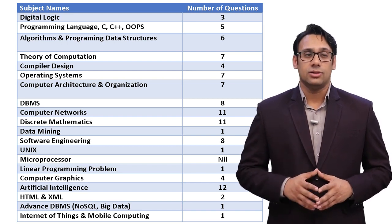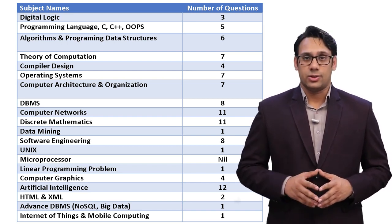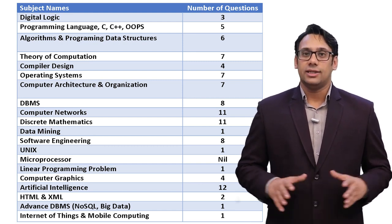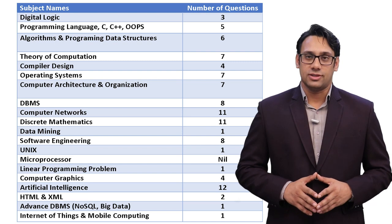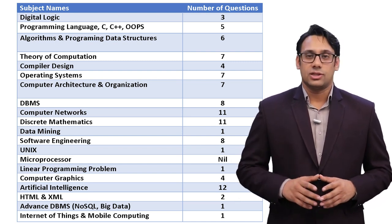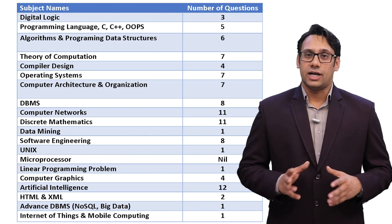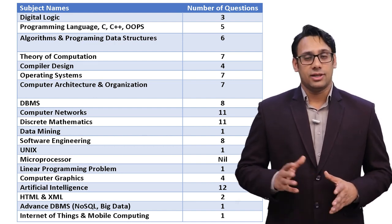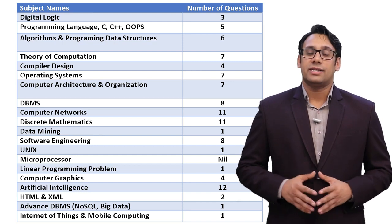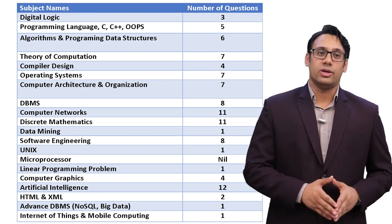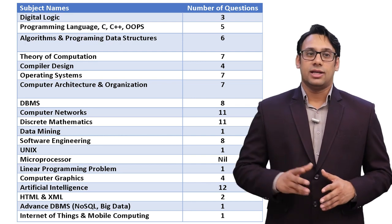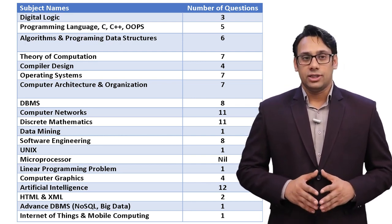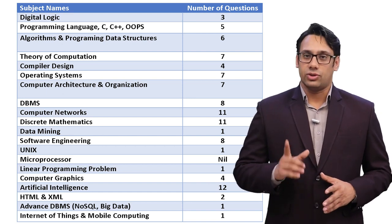Database management system: 8 questions. Computer networks: 11 questions. Discrete mathematics: 11 questions. Data mining: only 1 question. Software engineering: 8 questions. Unix: 1 question. They have not asked any question from microprocessor this year. From linear programming: only 1 question. Computer graphics: 4 questions. Artificial intelligence: 12 questions. HTML or XML: 2 questions. Advanced DBMS including NoSQL and big data: only 1 question. Mobile computing and IoT: only 1 question.